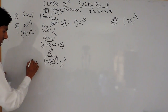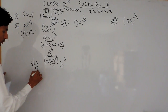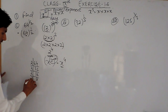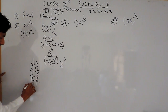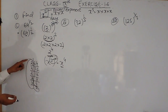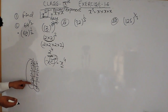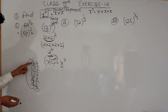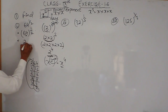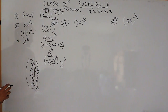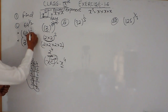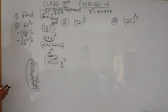Factorizing 64: it will be 2, 32; 2, 16; 2, 8; 2, 4; 2, 2 — giving us six 2s. So 64 can be written as 2 multiplied 6 times, or 2 raised to power 6. And instead of 64, we can write 2 raised to power 6, with the power of half remaining as it is.